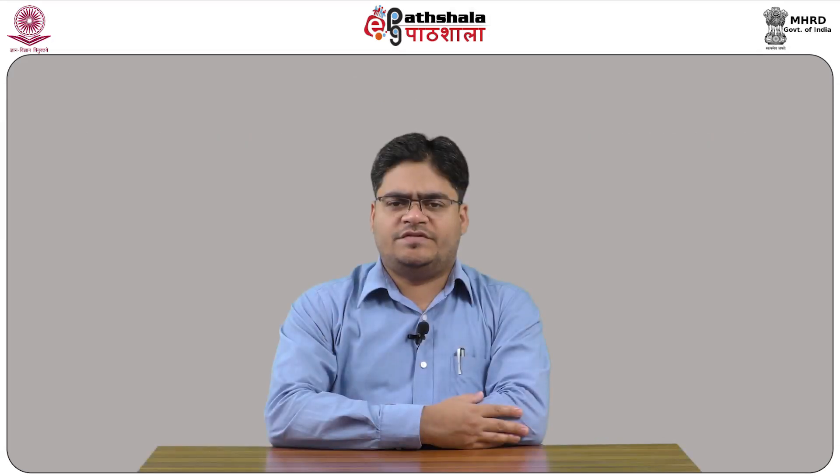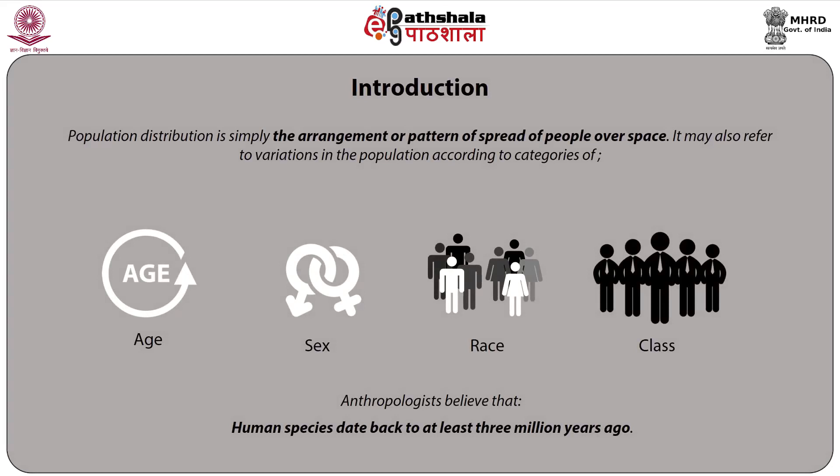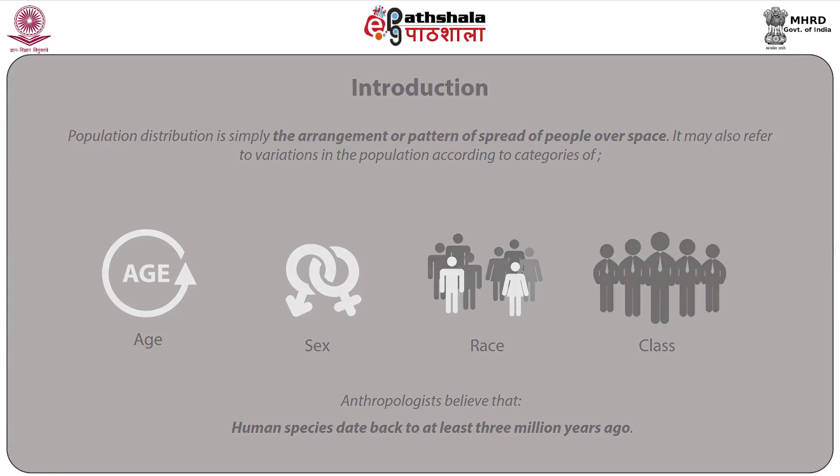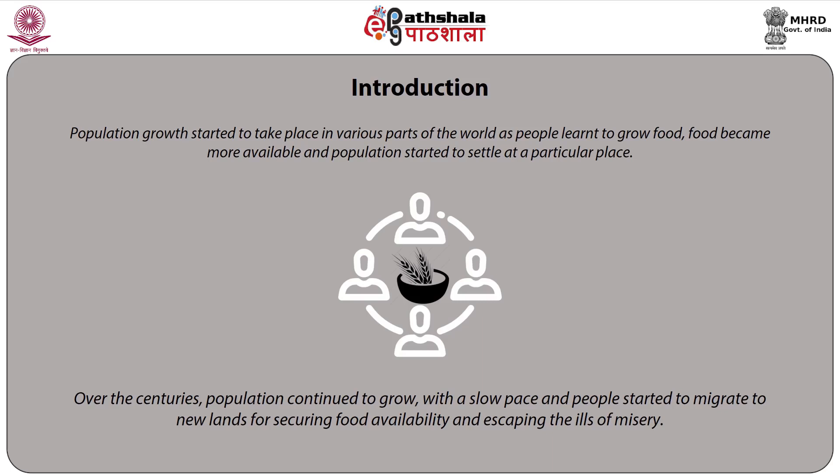Population distribution is simply the arrangement or pattern of spread of people over space. It may also refer to variations in the population according to categories of age, sex, race, and class in a given area. Anthropologists believe that the human species date back to at least three million years ago. Population growth started to take place in various parts of the world as people learned to grow food, food became more available, and populations started to settle at particular places. Over the centuries, population continued to grow at a slow pace and people started to migrate to new lands for securing food availability and escaping the ills of misery.